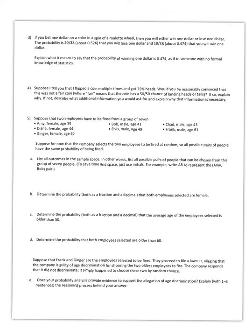If you bet $1 on a color in a spin of a roulette wheel, you will either win $1 or lose $1. The probability is 20/38 that you will lose $1 and 18/38 that you will win $1. What does it mean to say that the probability of winning $1 is 0.474?